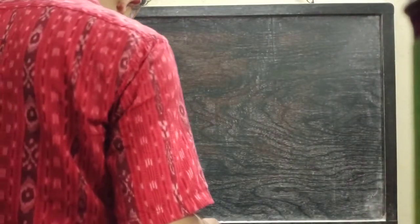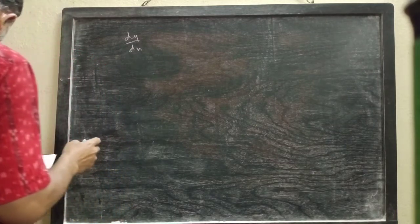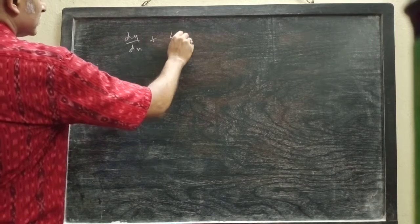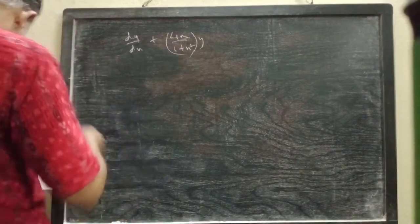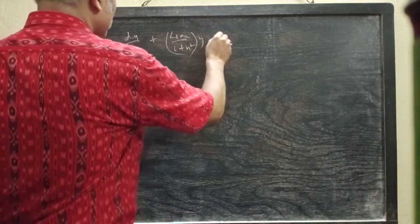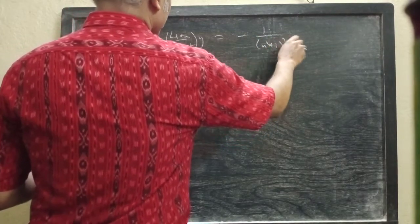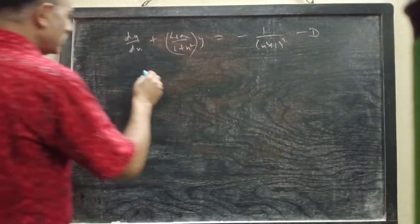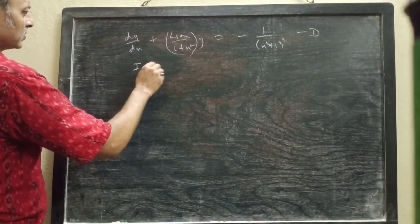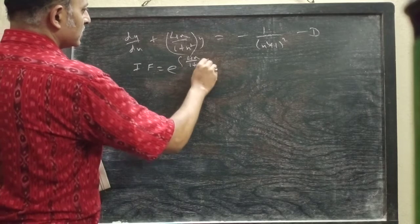Our next problem is dy/dx + 4xy/(1 + x²) = -1/(1 + x²). This is our equation (1). The integrating factor is e to the power of the integral of 4x/(1 + x²) dx.